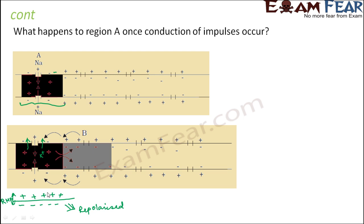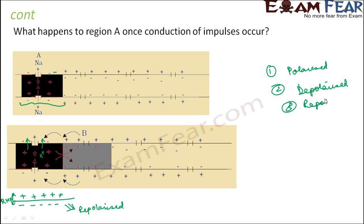This entire process of conduction takes place again from B to C, from C to D — that is how the movement takes place and the repolarized state is achieved for each region. So now you understand how action potential is generated and how it is conducted. The generation and conduction of action potential through neurons takes place in three steps: the first step is the polarized state, the second is the depolarized state, and the third is the repolarized state.